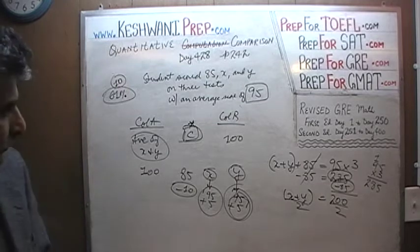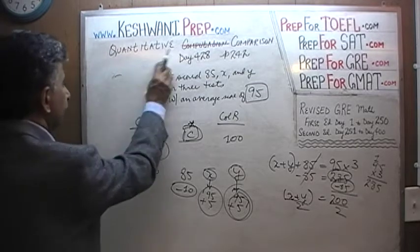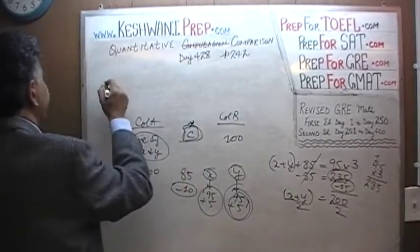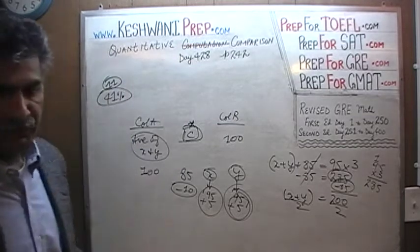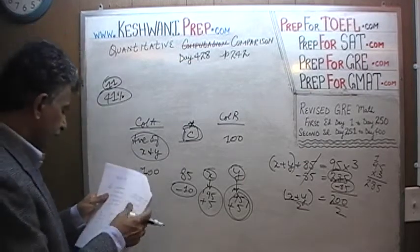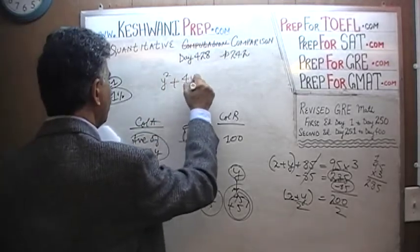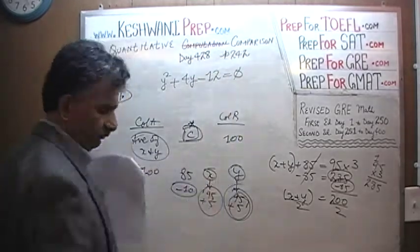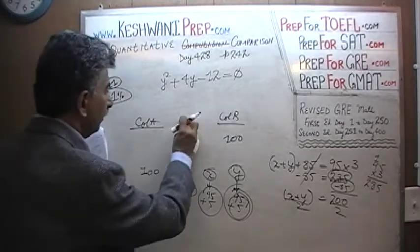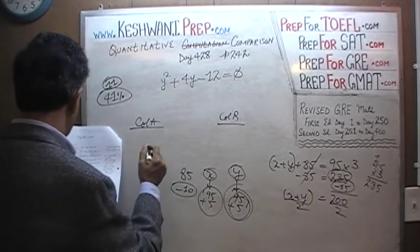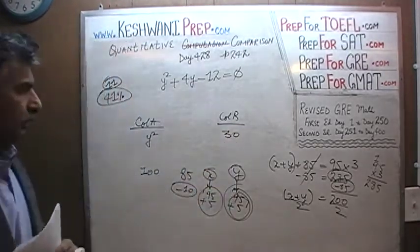Question number 11. When it was given in the exam, about 41% of people got it right — about three-fifths of the people missed it. We are given a quadratic equation: Y squared plus 4Y minus 12 equals 0, a quadratic equation in standard form. What we are being asked to compare in the two columns is Y squared versus 30.